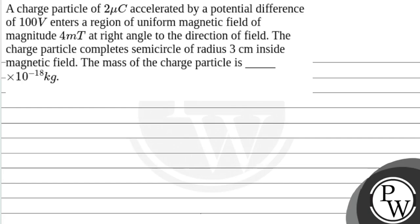The question is: given that a charged particle of 2 microcoulombs, accelerated by a potential difference of 100 volts, enters a region of uniform magnetic field of magnitude 4 microtesla at right angle to the direction of the field. The charged particle completes a semicircle of radius 3 cm inside the magnetic field. The mass of the charged particle is dash into 10 to the power minus 18 kg.